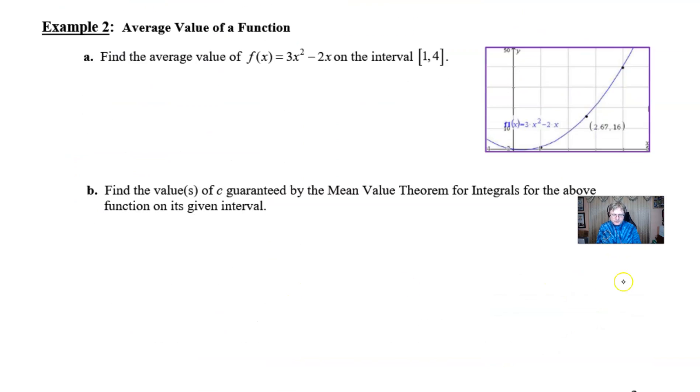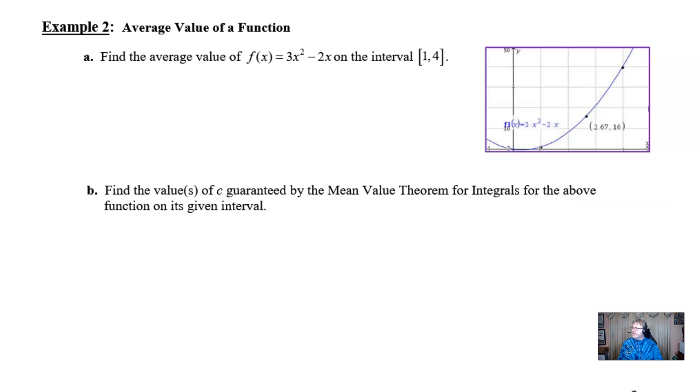Let's go on and take a look at example two. Find the average value of f(x) equal 3x squared minus 2x on the interval 1 to 4. It is so nice to see that the interval 1 to 4 is showing up on the graph nicely. We actually have a sketch. And then find the value of c guaranteed by the mean value theorem for integrals for that above function. The only difference, we're not using a calculator. If you want to challenge yourself, this would be an awesome time. You could pause this video.